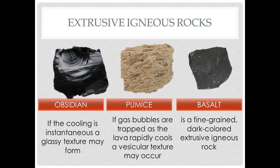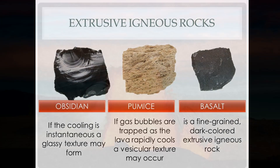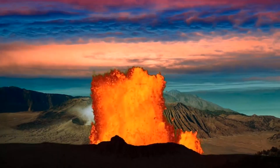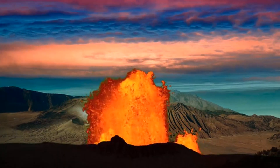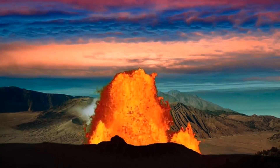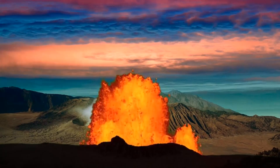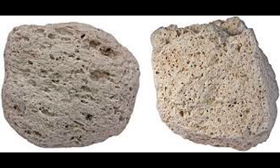Extrusive igneous rocks can also have a vesicular or holey texture, like pumice. When the ejected magma still has gases inside of it, the gas bubbles get trapped and give the rock a bubbly texture.